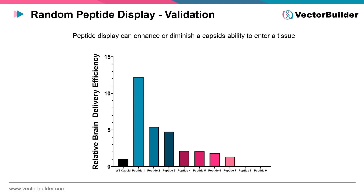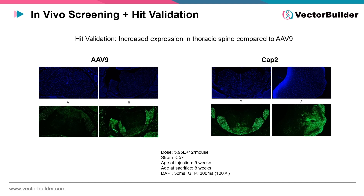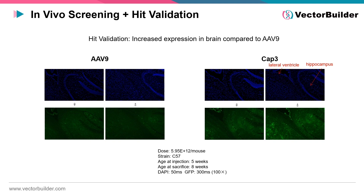Following bioinformatics screening of the library, VectorBuilder can provide individual HIT validation. Novel variants identified from screening were individually packaged and tested against their parental capsid. These novel variants either resulted in enhanced or depleted transgene expression in the target tissue, indicating that the parental serotype can be modified for gene delivery. VectorBuilder can also provide in vivo validation using fluorescence microscopy as well as other methods, and these variants have resulted in increased transgene expression in the spinal cord and brain.